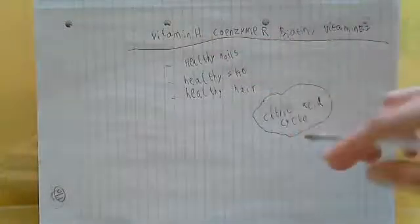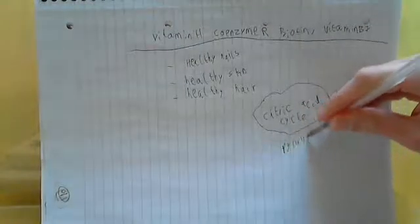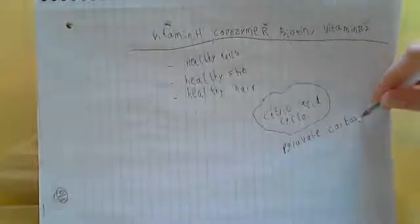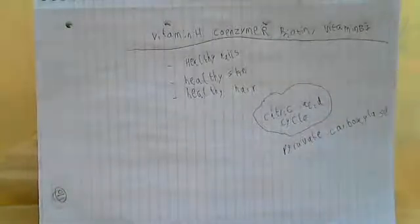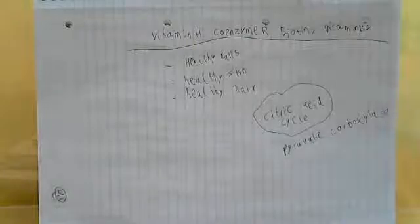Basically, how this assists the citric acid cycle is there's an enzyme called pyruvate carboxylase. Now, we haven't come across this particular enzyme at all before, but the only important thing that this actually does is it assists the conversion of acetyl coenzyme A,